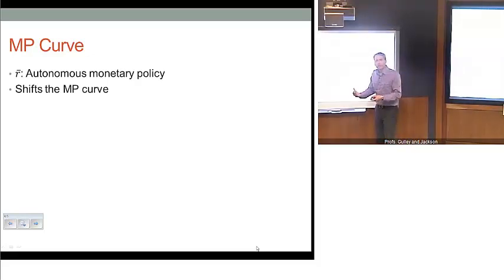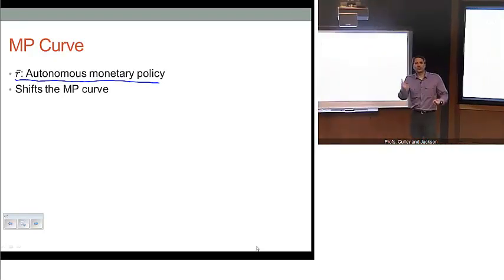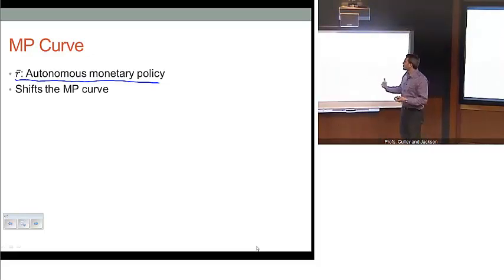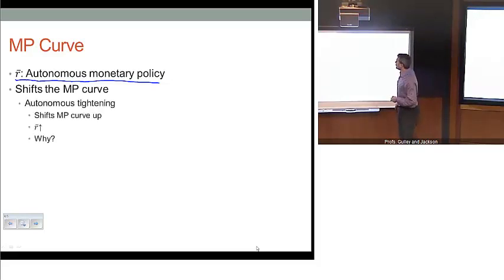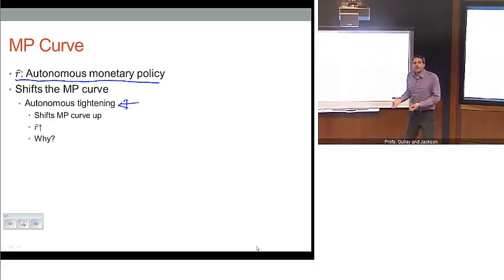The other part of the story in the MP curve is this so-called autonomous policy parameter, R bar. The idea is that R bar represents changes in monetary policy designed to impact the economy because of changes in economic conditions, other than simply changes in the current inflation rate. Changes in the autonomous policy parameter are going to act like shifts of the MP curve. As an example, if we wanted to conduct autonomous tightening of monetary policy, that's going to be an increase in that R bar parameter. Even if inflation is holding steady right now, policymakers might decide to increase this autonomous policy parameter.